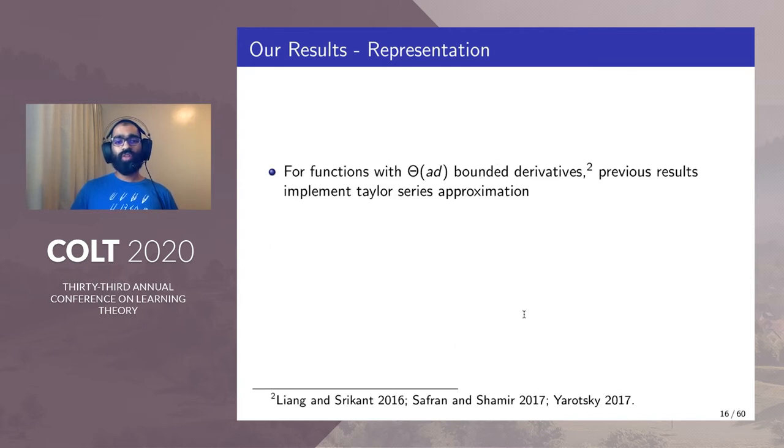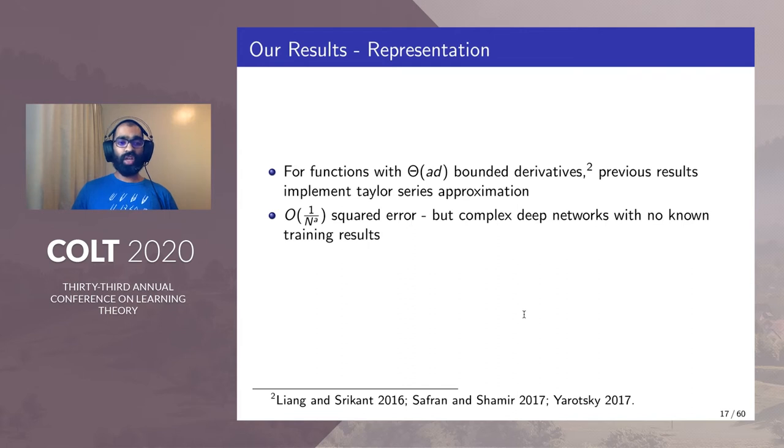So for functions with θ(a·d) bounded derivatives, previous results implement Taylor series approximation. You get 1/n^a squared error, but via complex deep networks with no known training results.